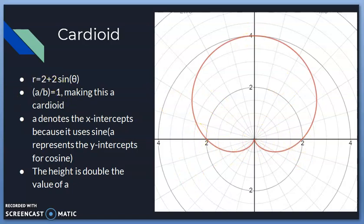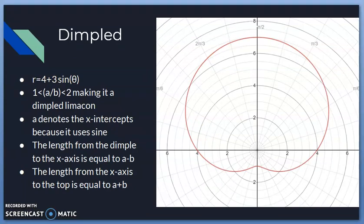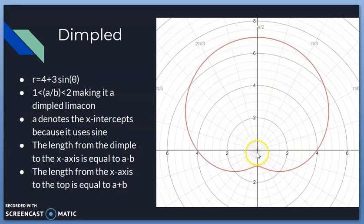This is a dimpled limaçon: r = 4 + 3·sinθ. It's dimpled because 1 < a/b < 2, which holds here. Since it uses sine, a denotes the x-intercepts; if it used cosine, a would denote the y-intercepts. The length from the dimple to the x-axis is a − b = 1, and the length from the x-axis to the top is a + b = 7.